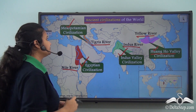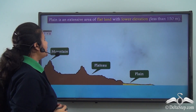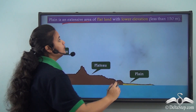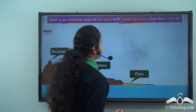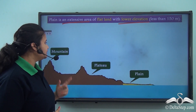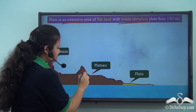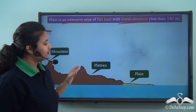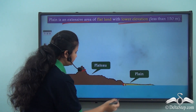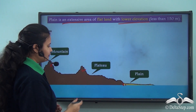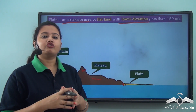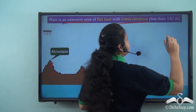Before discussing the importance of plains, let us first understand what kind of landform a plain is. A plain is an extensive area of flat land with lower elevation. The elevation of a plain is comparatively lower than the other two landforms, that is mountains and plateaus. The average elevation of a plain is less than 150 meters.